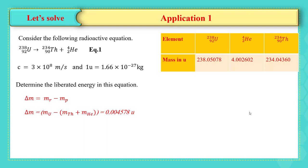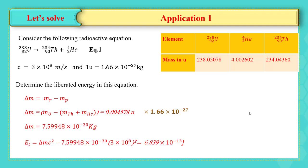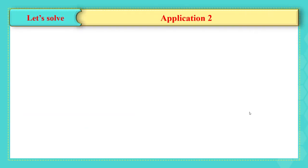We get 0.004578 u. But the SI unit of delta m is kilogram, so we have to convert this mass into kilogram by multiplying it by 1.66 times 10 to the power of minus 27. So delta m becomes 7.59948 times 10 to the power of minus 30 kilogram. Now we apply the formula: the liberated energy E equals delta m times the square of the speed of light in vacuum. Substituting the values, we get 6.839 times 10 to the power of minus 13 joule.